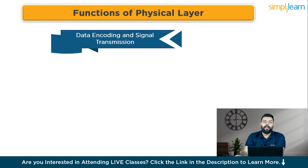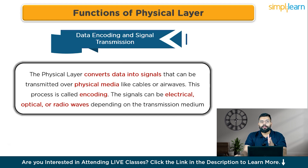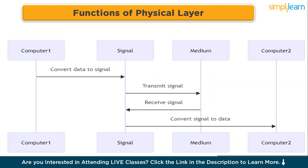Let's look at the functions of the physical layer. Function one is data encoding and signal transmission. The physical layer converts data into signals that can transmit over physical media like cables or airwaves — this process is called encoding. The signals can be electrical, optical, or radio waves depending on the transmission medium. Think of encoding as translating a message into Morse code: the message (data) is encoded into dots and dashes (signals) that travel through a telegraph wire (transmission medium).